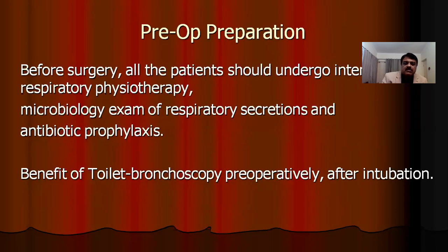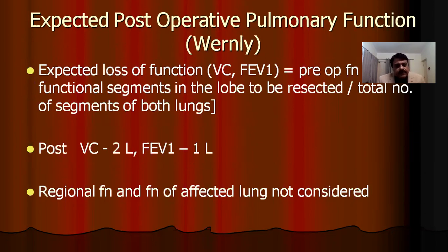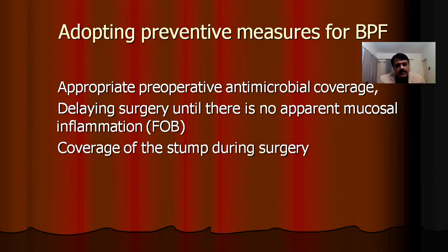Complete resection prevents recurrence. Preoperative preparation is of essence — patients should undergo intensive respiratory physiotherapy and appropriate antibiotics. The need for toilet bronchoscopy preoperatively after intubation cannot be overstated. A useful equation predicts postoperative pulmonary function from pre-op PFT to calculate vital capacity and FEV1. A VC above two liters and FEV1 above one liter — please consider these patients for surgery. During surgery, additional attention is given to preventing a bronchopleural fistula, which can be covered with pleura, intercostal muscle, or any vascular tissue.